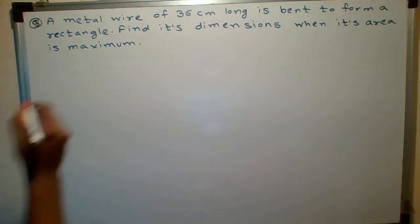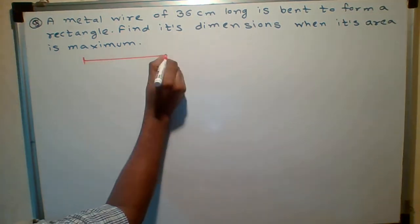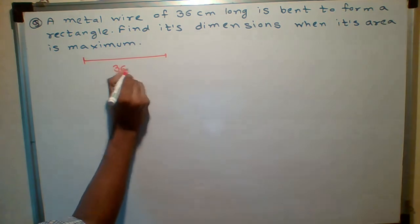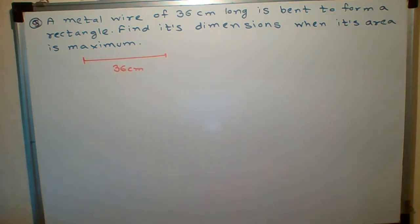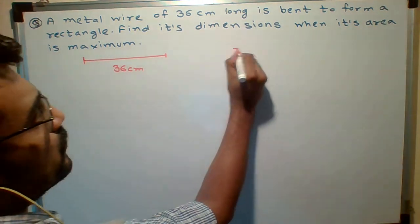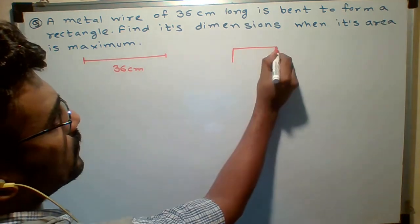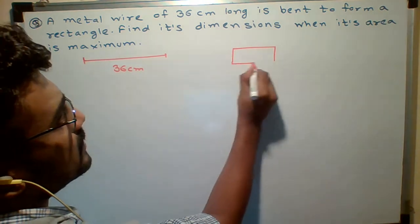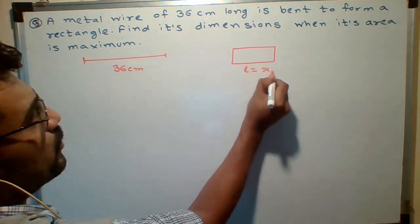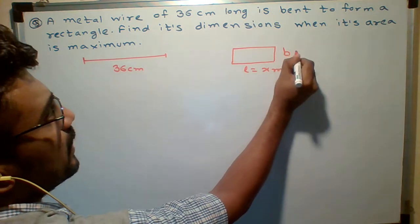So students, initially wire is of 36 cm long. This wire is bent to form a rectangle having some length. Let length be x meter, breadth I don't know.